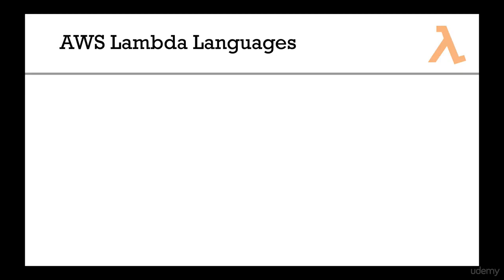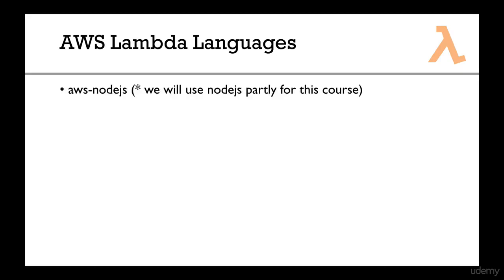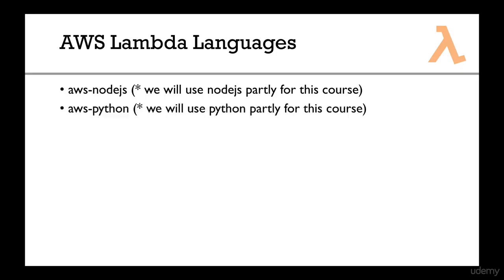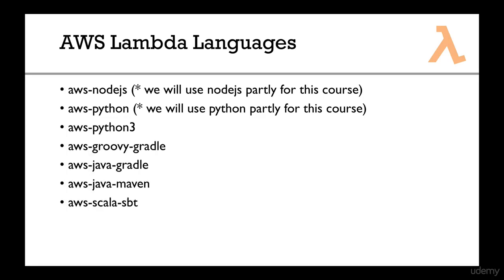Let's talk about which languages you can use with AWS Lambda. You can use Node.js and Python — we will use both for this course. I don't think one language is better than the other; both are possible. They're very easy languages — JavaScript and Python. You can also use Python 3, Groovy Gradle, Java Gradle, Maven, Scala SBT, and C#. So there are lots of different runtimes available.